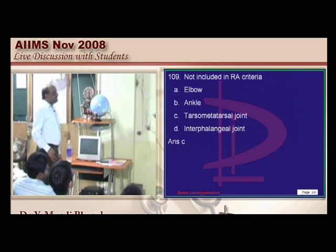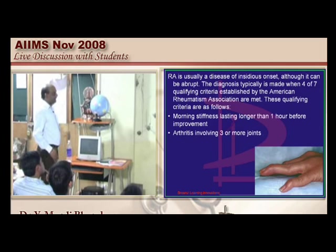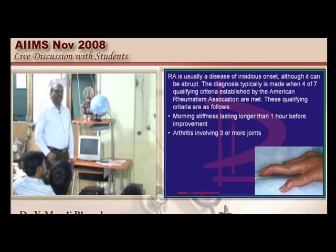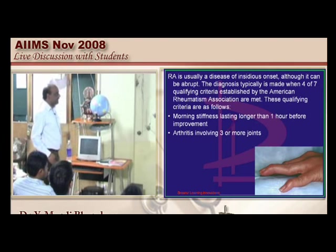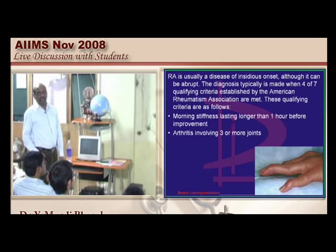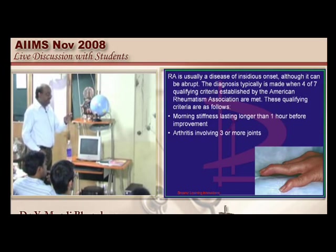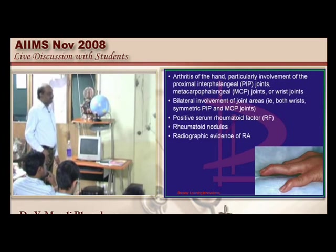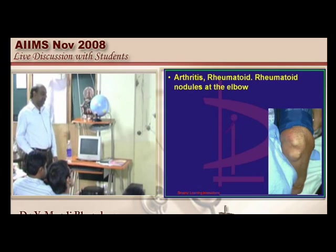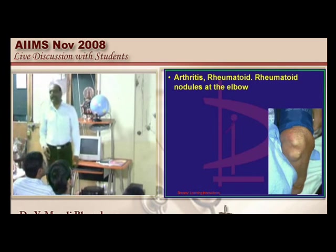In the rheumatoid arthritis criteria, ankle and elbow are present. You must know the American College of Rheumatology criteria for RA: morning stiffness longer than one hour, arthritis in three or more joints — specifically proximal interphalangeal, metacarpophalangeal, and wrist joints — bilateral joint involvement, positive rheumatoid factor, rheumatoid nodules, and radiological evidence.